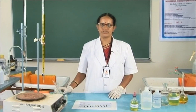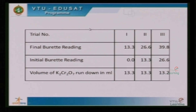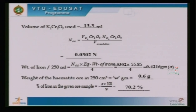Observation and calculations of the experiment: The weight of the sample transferred to prepare the solution is 0.0697 grams. The normality of the solution is 0.0569. The readings are tabulated as shown. The weight of hematite ore in 250 cm³ is 0.6 grams. The percentage of iron calculated in the given ore sample solution is 70.2%.